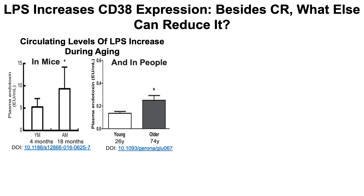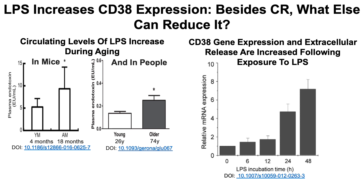First, levels of LPS increase during aging, and that's been shown in mice and in people. The age-related increase in LPS is important because CD38 gene expression in macrophages is increased up to sevenfold in the presence of LPS. Also, when macrophages are exposed to LPS, they don't just increase gene expression — they release CD38 into the external environment, potentially increasing circulating CD38 to negatively impact NAD levels systemically.